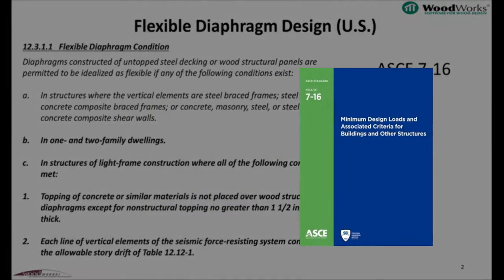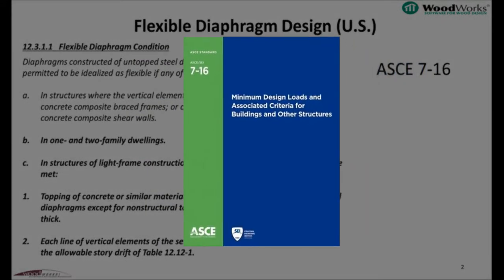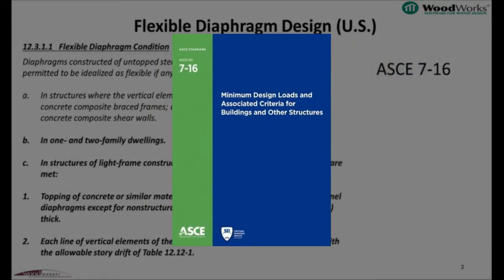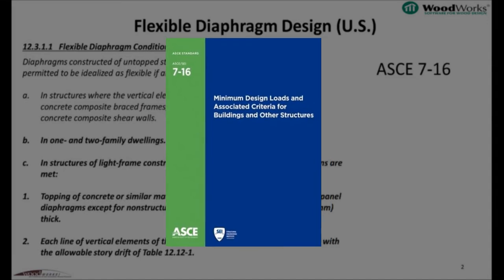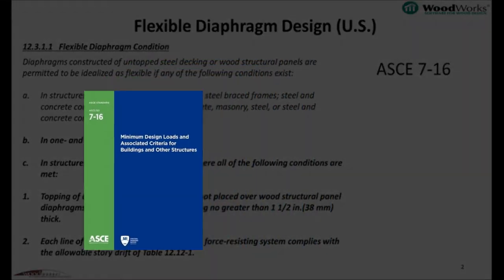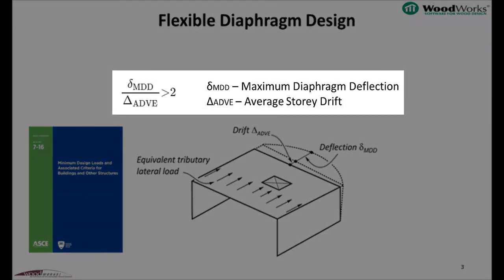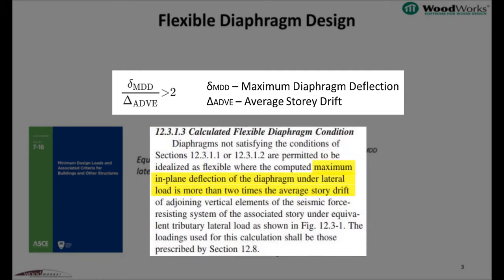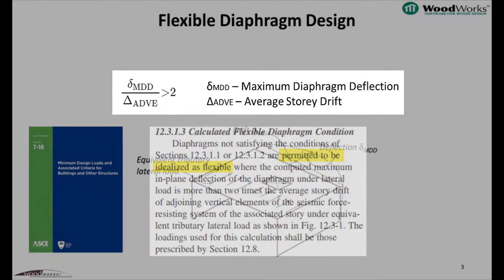As I mentioned, ASCE 7-16 provides guidance for when a diaphragm may be idealized as flexible. The equation shown here indicates that if the maximum diaphragm deflection is greater than two times the average shear wall story drift, then the diaphragm can be idealized as flexible.